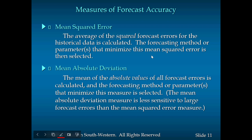We use a couple of benchmarks to capture forecast accuracy. One of them is called mean square error (MSE). We calculate the average of the squared forecast errors for the historical data and minimize it. The formula involves squaring the difference (yt minus ft), where yt is the observed data and ft is the forecast. The smaller the MSE, the better your forecast — meaning your forecast is more accurate.